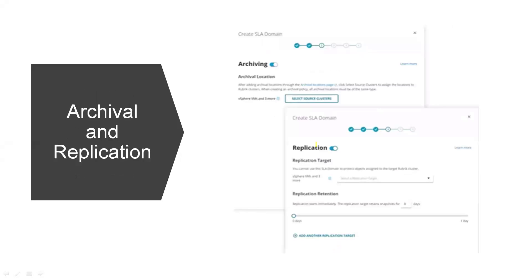Next, archival and replications. Archival location is where we can send a secondary copy — either to other clusters, any NAS storage, or cloud storage. We can create archival locations and configure them here. Then replication: we can replicate from one cluster to another cluster. We select the replication target and define the replication retention period.